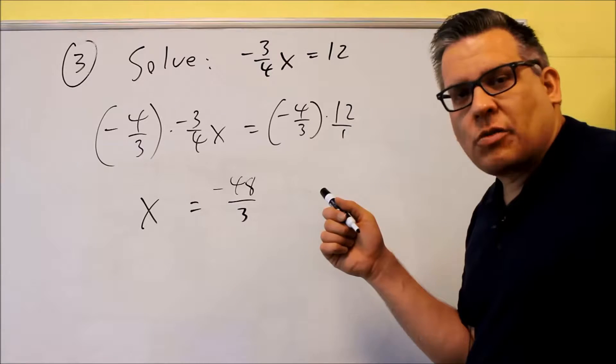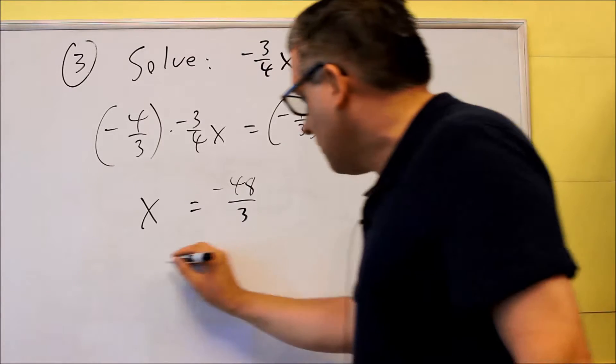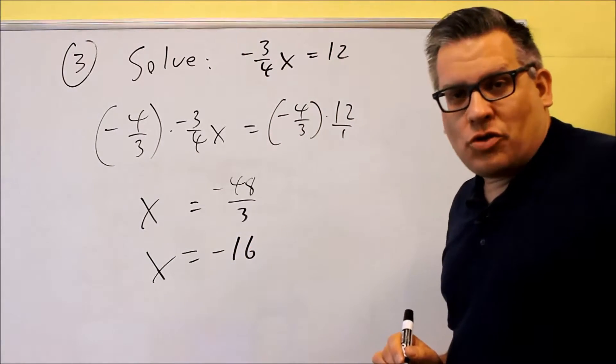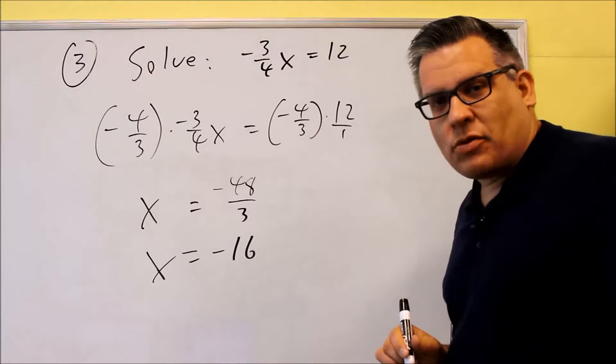Remember that you always want to make sure you reduce your answers to lowest terms. That's what the directions in the test will say. So we can reduce that down to X equals negative 16, and that's the same approach that was on the sample test.